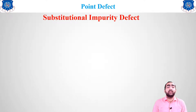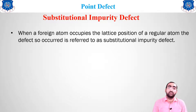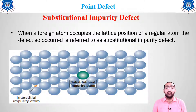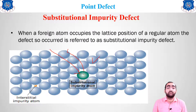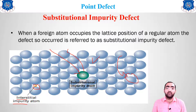Moving forward to substitutional impurity defect. When a foreign atom occupies the lattice space of a regular atom — meaning a regular atom goes away and is replaced by a foreign particle of the same size — that is known as a substitutional impurity defect. As shown, a green atom has replaced one blue atom. If the replacement atom is small, it is interstitial impurity; if it is of the same size and same type, it is a self-interstitial defect.